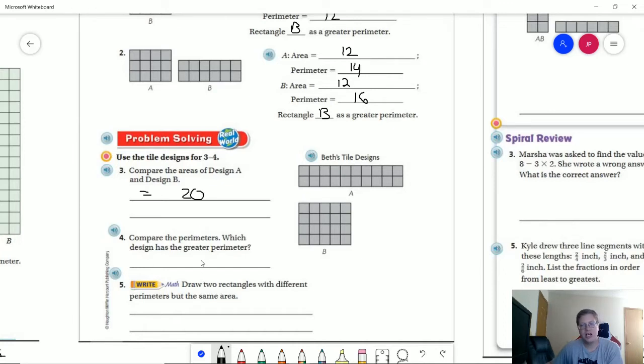Compare the perimeters. Well, this one is going to end up having a longer or greater perimeter. So our perimeter for this one would be 4, 5, 6, 7, 8, 9, 10, 20, 24 for A. And that would have B, 24. And then our other one would be 5, 10, 14, 18.